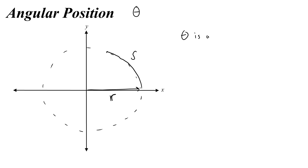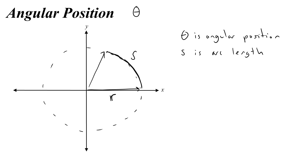So let's write this. Theta is angular position. S is arc length, or sometimes we call it the path length. So one radian is when your arc length s is equal to the radius. So 1 radian is your angle theta when the arc length s is equal to the radius.